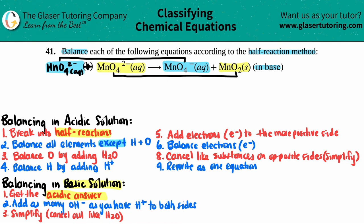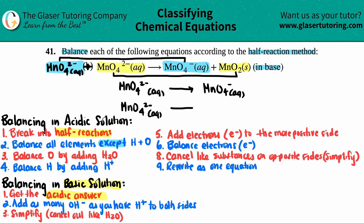That's a little trick. So we'll have two half reactions: one that's MnO4²⁻ aqueous yielding MnO4⁻ aqueous, and then the same reactant — assuming we have two of these — yielding MnO2 solid. So that step is done.